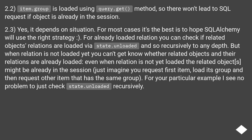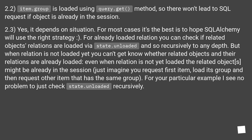For already-loaded relations you can check if related objects' relations are loaded via state.unloaded, and so on recursively to any depth. But when a relation is not loaded yet, you can't know whether the related objects and their relations are already loaded — even when a relation is not loaded, the related objects might already be in the session. Just imagine you request the first item, load its group, and then request another item that has the same group. For your particular example I see no problem with just checking state.unloaded recursively.